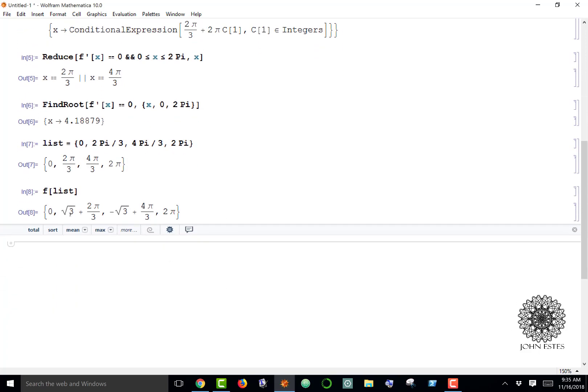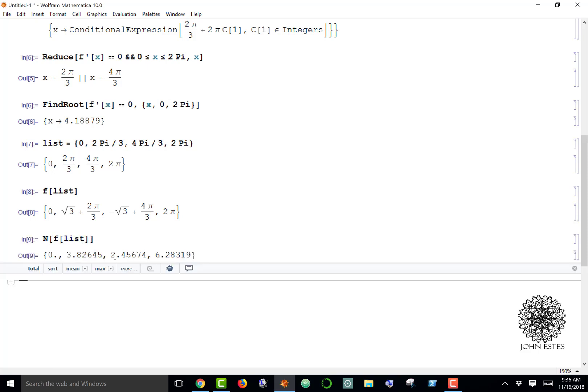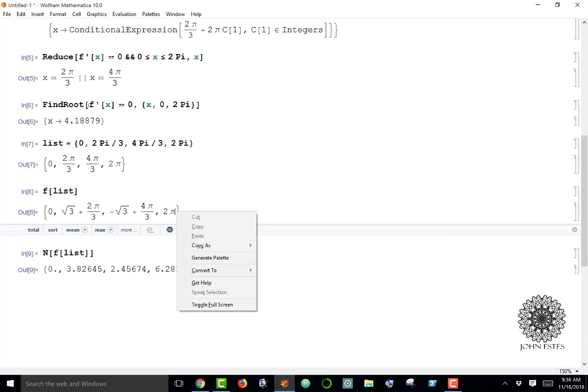Here are my values. If you're not too clear on what these actually are, you can say n f list and it'll give you the numeric approximations. For example, root 3 plus 2 pi over 3 is actually around 2.82645. Looking at this list, I can easily see the 0 is my min and the 6.283, or 2 pi, is my max.